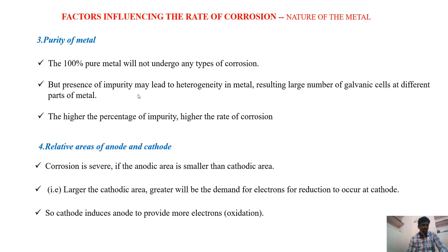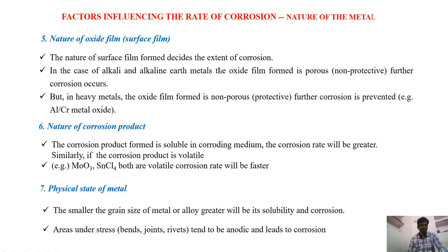Next is relative areas. If the area of the anode is less than the cathode, then the cathode demands more electrons. So the anode has to supply more electrons to the cathode, and automatically that metal will be corroded very quickly.